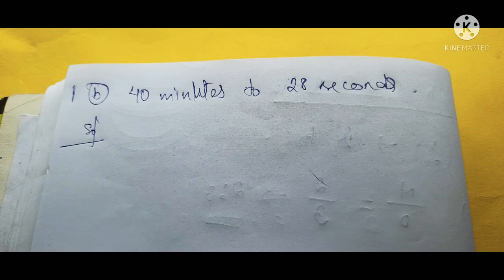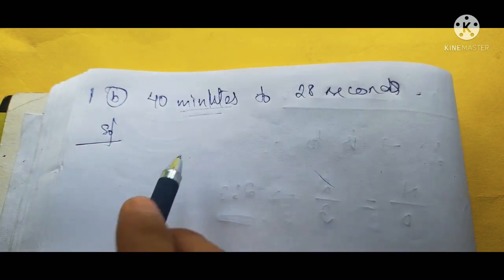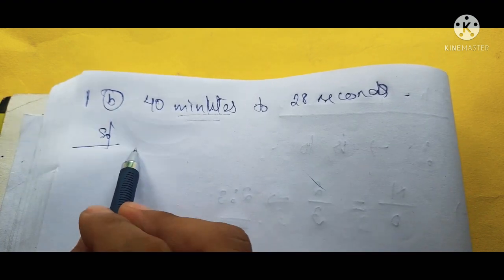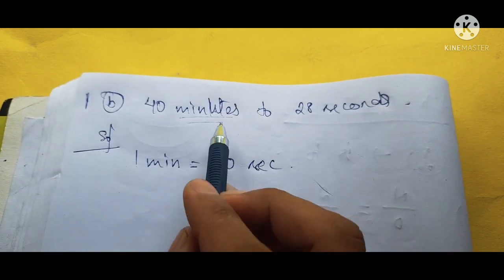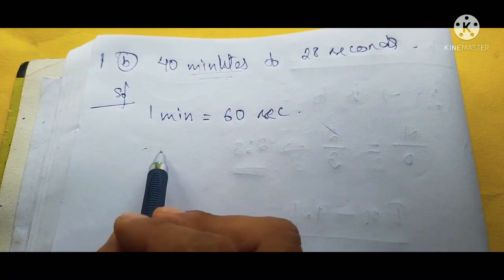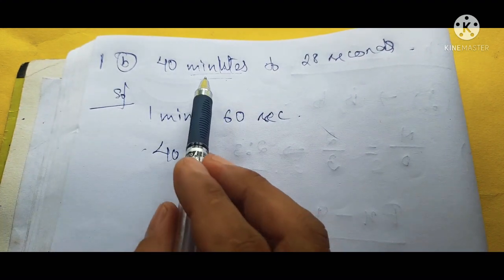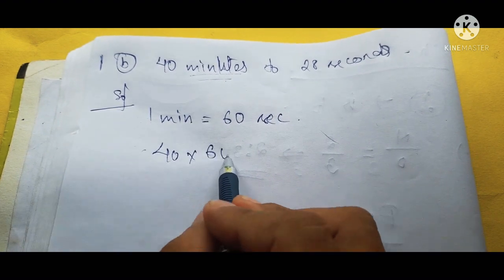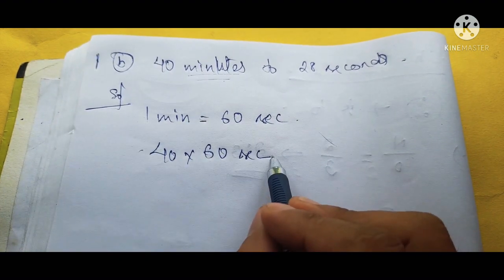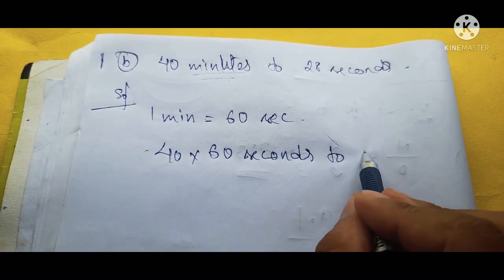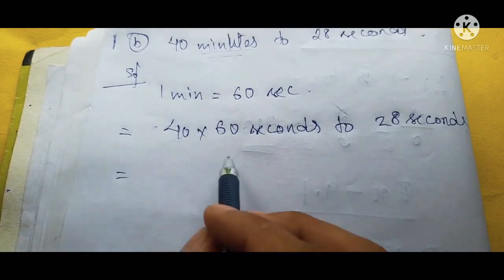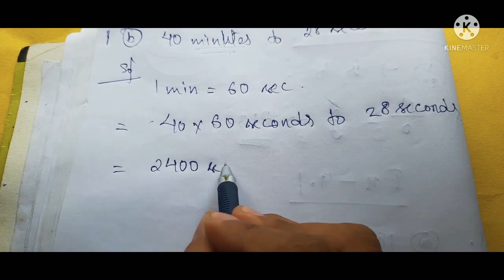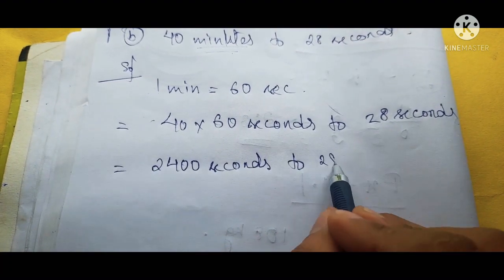Now we are going to do question 1B: 40 minutes to 28 seconds. Since the units are different, we need to convert minutes into seconds. In 1 minute there are 60 seconds. So 40 minutes into 60 gives us 2,400 seconds. The problem becomes 2,400 seconds to 28 seconds.